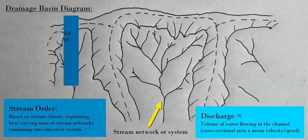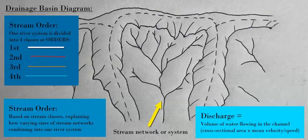The river itself has four distinct different orders of streams, culminating in the end result of a large river flowing down the channel towards a lake, the ocean, or sea level.